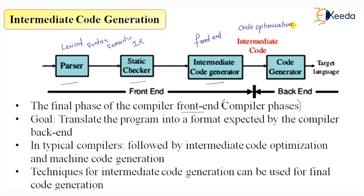Code optimization is part of the back-end, and finally there is code generation. These two parts make up the back-end. So intermediate code generation is the final phase of the front-end, and its goal is to translate the program into a format expected by the compiler back-end.